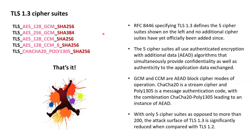The first two cipher suites listed at the top make use of the GCM block cipher mode of operation: one with 128-bit keys and SHA-2 with 256-bit hash values to be used within the HMAC-based key derivation function HKDF, and one with 256-bit keys and SHA-2 with 384-bit hash values to be used with HKDF.